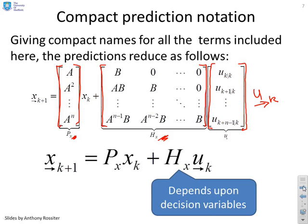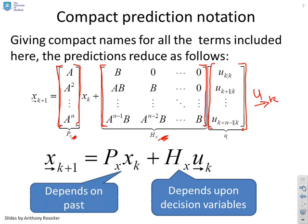So I put that together. This is what I've got. And the nice thing about this is I've now got a very compact expression that is also neatly separated into things that I know and things that I can choose. You'll see I've got the Px times xk, things that I know, and you've got the Hx times u future k.